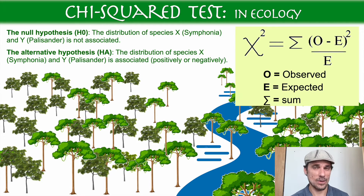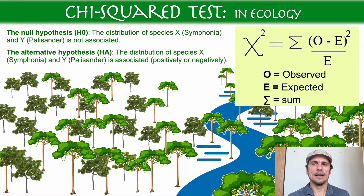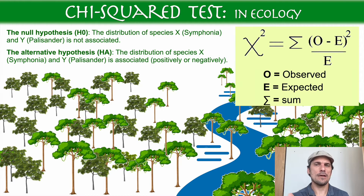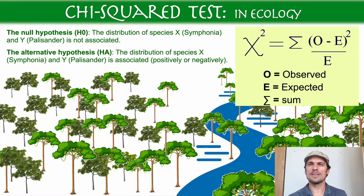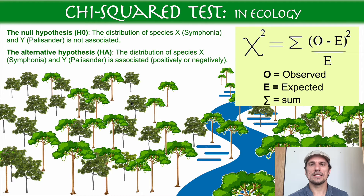Welcome to this video about the Chi-squared test. I live in Madagascar and I take my students into the rainforest — this is one of the things we do. We wanted to look at whether two different species of hardwood trees found in the rainforest, Symphonia and Palisander trees, are associated. We observed them together pretty often. Is it statistically significant how often we find them together? That's the question we're asking.